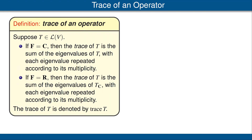Now we can define the trace of an operator. Suppose T is an operator on V. We break the definition into two cases. For the case where V is a complex vector space, the trace of T is defined to be the sum of the eigenvalues of T, with each eigenvalue repeated according to its multiplicity.